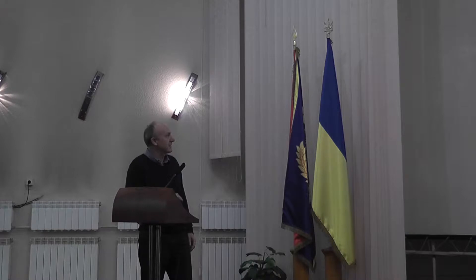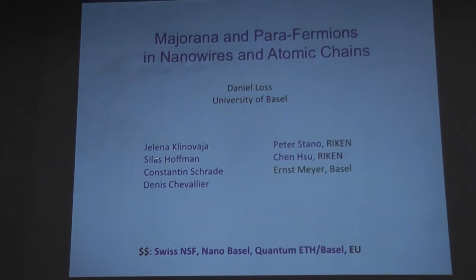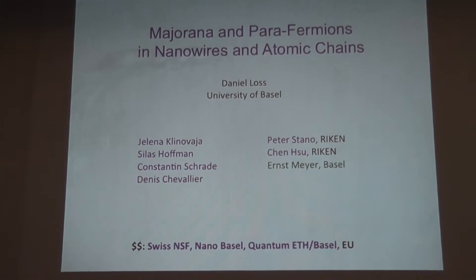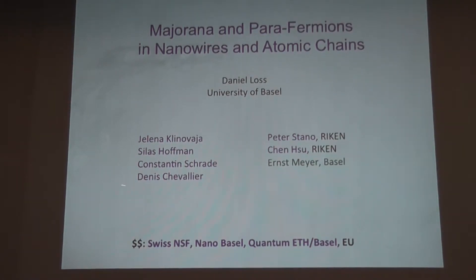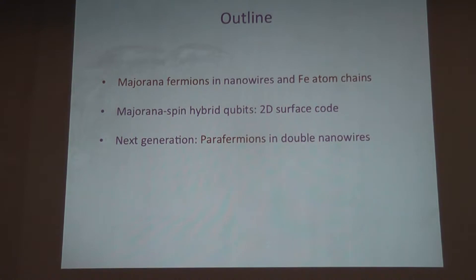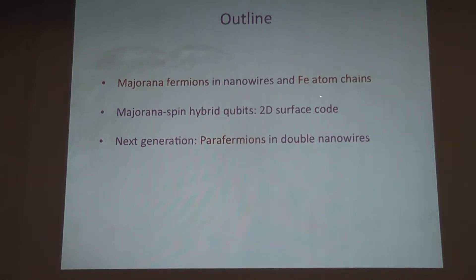I should acknowledge my collaborators: Birien Aftin-Waier, a new colleague in Basel, and Suri von Schade and Dennis Chevalier, who is also here. And people in Japan: Peter Stano, Jinsu, and my experimental colleague Ernst Mayer. The outline of my talk is: first I introduce some basic concepts about Majorana fermions in Majorana wires, and then in particular our focus on the Majoranas recently reported to be observed in iron atom chains on lead.